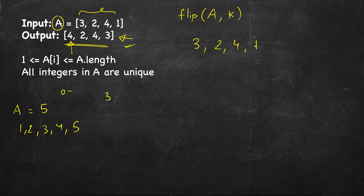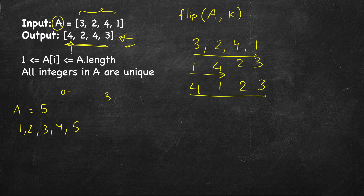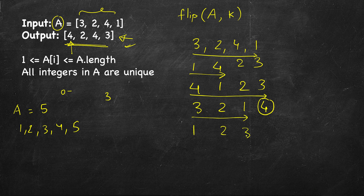So flipping reverses the prefix: 3 2 4 1 flipped at 4 gives 1 4 2 3. Next, flip 2 — the first two elements — giving 4 1 2 3. Then flip 4 again: 3 2 1 4, so 4 is now at its correct place. Next flip 3: it becomes 1 2 3 4 and now it's sorted. So the sequence of flips performed was 4, 2, 4, 3.